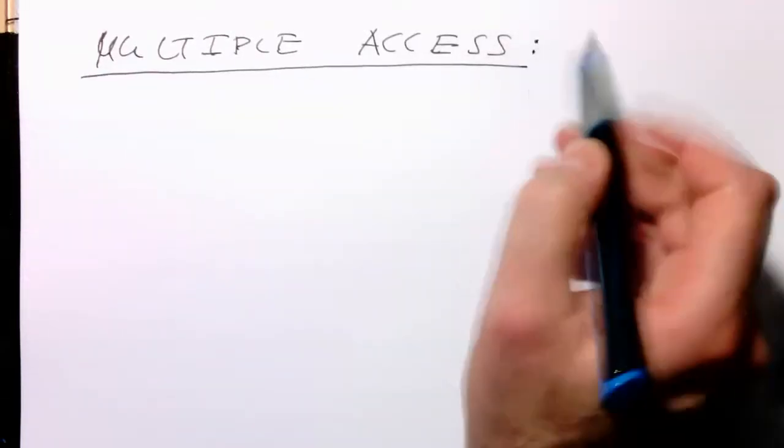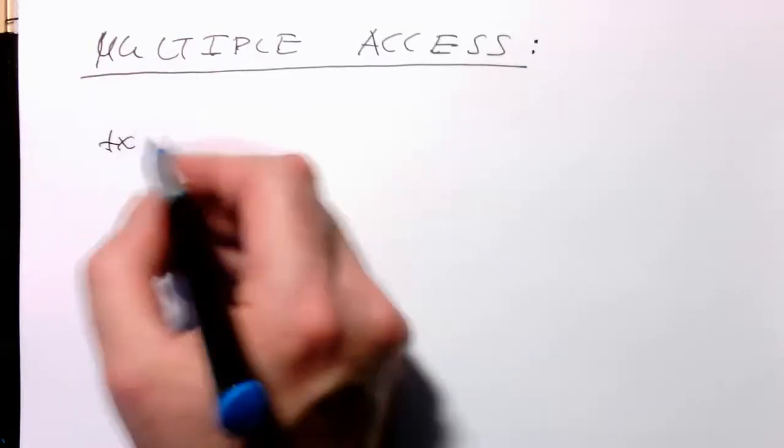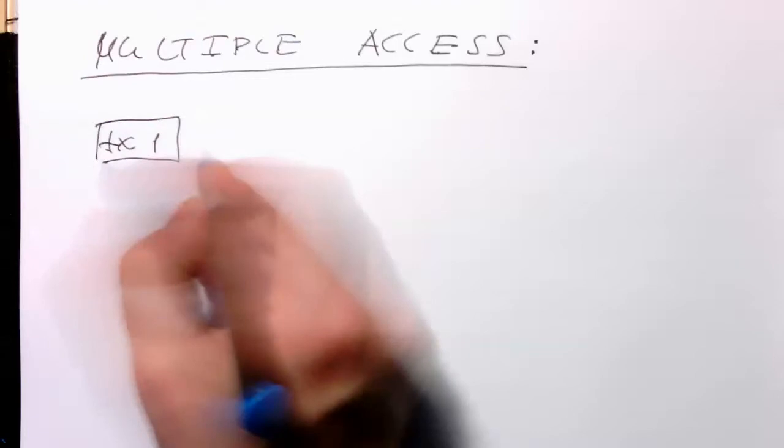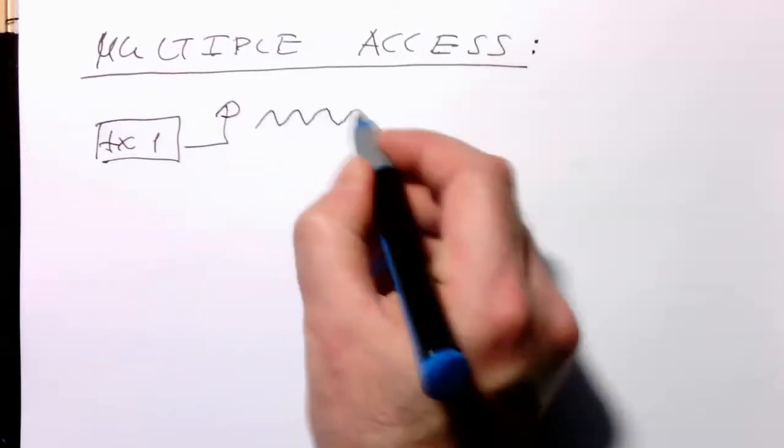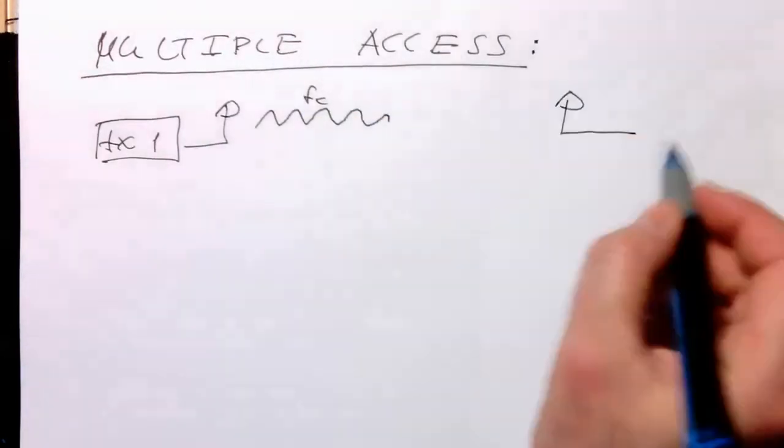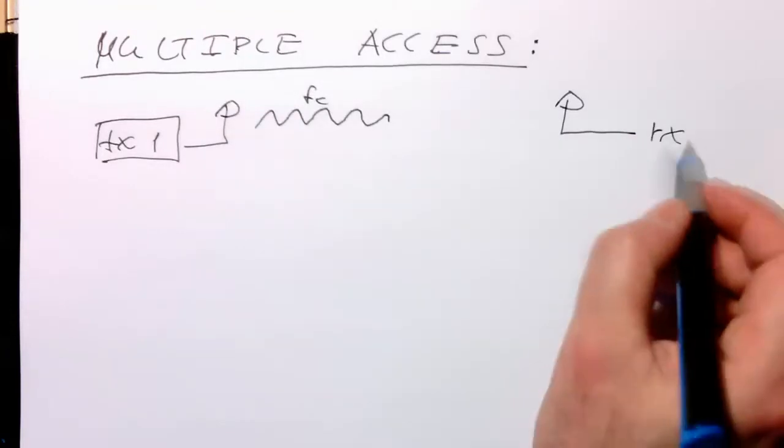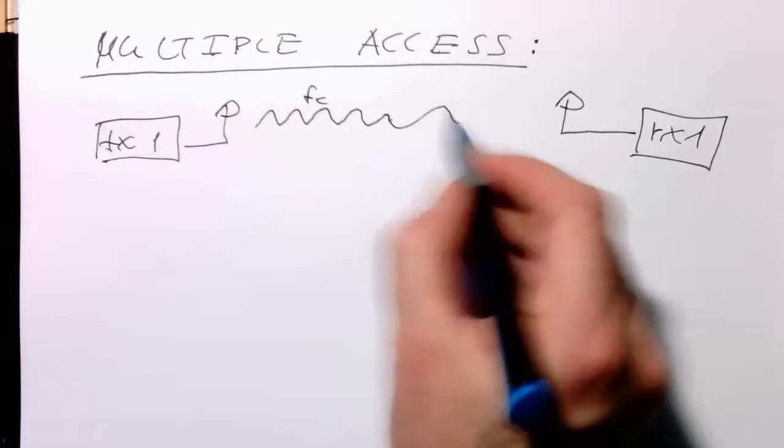So remember, so far we have a transmitter TX1, for example, and this transmits on a certain carrier frequency FC, and then this is received here on the other side at receiver 1. So let's just draw this like that.